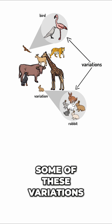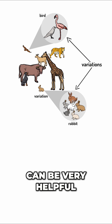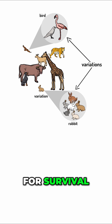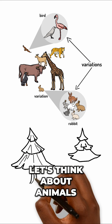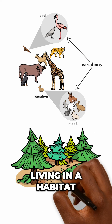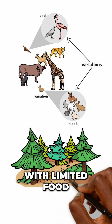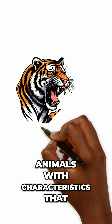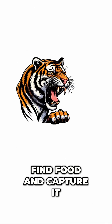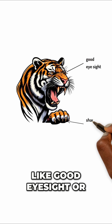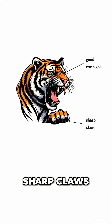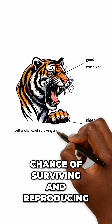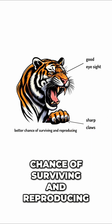Now, some of these variations can be very helpful for survival. Let's think about animals living in a habitat with limited food. Animals with characteristics that make it easier to find food and capture it, like good eyesight or sharp claws, will have a better chance of surviving and reproducing.